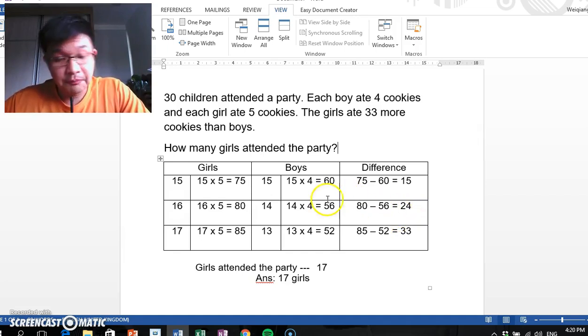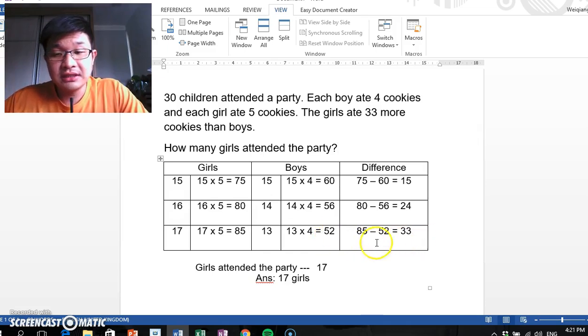Why not try one more? So I try 17 and 13. 17 girls ate 85 cookies, and 13 boys ate 52 cookies. The difference becomes 33—that's the answer. The girls ate 33 more cookies than the boys, and therefore the number of girls who attended the party is 17.